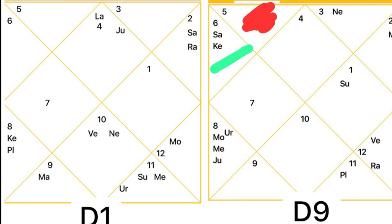Now step 2: we have to see where Saturn is placed in the D9 chart, the Navamsa. We can see that Saturn is sitting in the 3rd house in the D9 chart — so that 3rd house is the Karkamsa. To predict the Isht Devta, we look 12th from the Karkamsa. If any planet is sitting in that 12th house, that planet tells you about the Isht Devta.